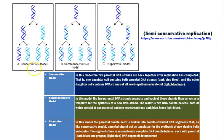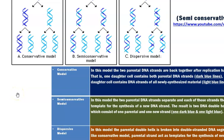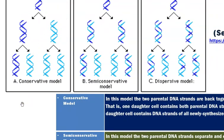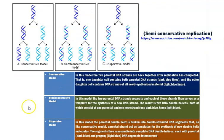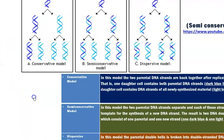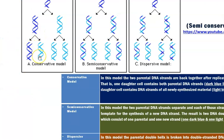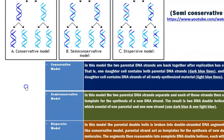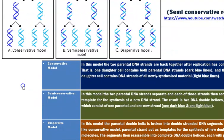We now look at the various models of DNA replication. Currently, there are three models available: the conservative model, the semi-conservative model, and the dispersive model. These three models explain how DNA may be replicated. In the conservative model, the two parental DNA strands are kept together after replication is completed — the two parental strands go back into one cell and the newly formed daughter strand goes into the other newly formed cell.